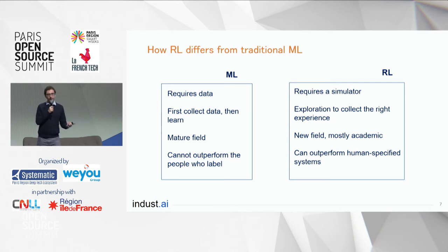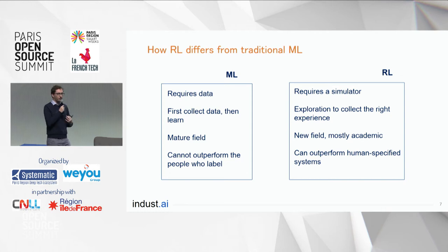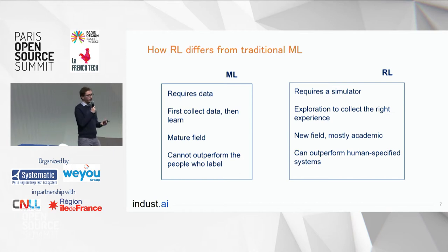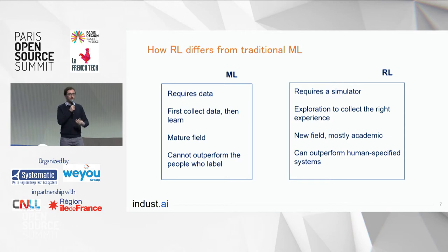In machine learning you cannot do better than the people who provide the labels for your data — at best you can do as well as they can. But in reinforcement learning you can definitely outperform human-specified systems. Nowadays the best chess-playing AIs are made with reinforcement learning, not with heavily hand-engineered systems with rules designed by humans.